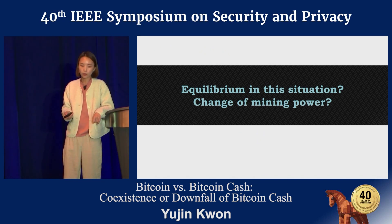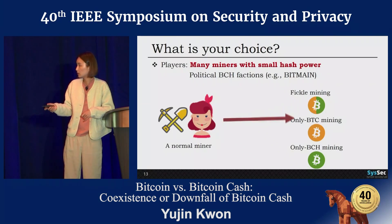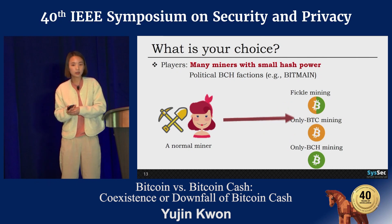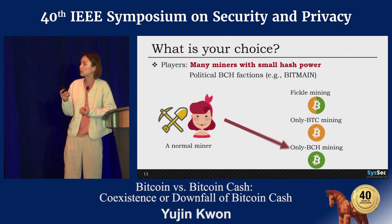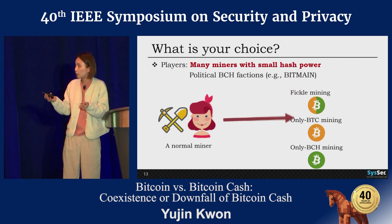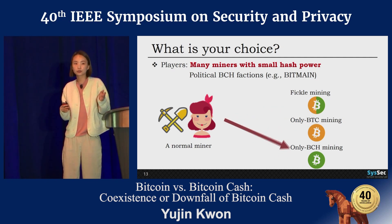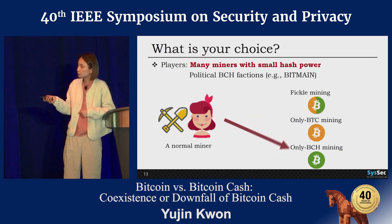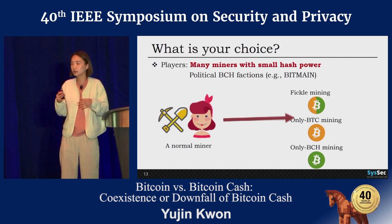Considering this fickle mining, what will happen? More formally, what are the equilibria in this situation, and how will mining power change? To answer this, we construct a game and analyze it. There are two types of players: first, many miners with more hash power; and second, political BCH factions. The usual rational miner dynamically chooses the most profitable strategy among three options: fickle mining, only BTC mining, and only BCH mining. Only BTC and only BCH mining means they continuously mine that respective coin regardless of mining difficulty.